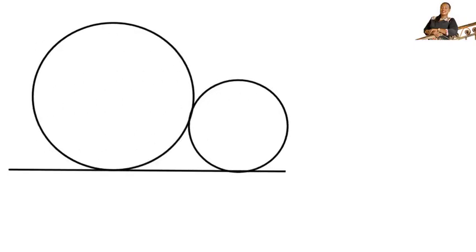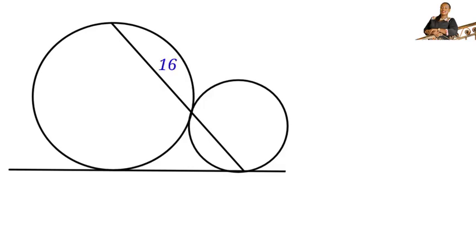We are given two circles resting on the same line. The smaller one touches the larger one externally. A straight line is drawn from the top of the larger circle through the point of contact down to the baseline. The length of the chord of the bigger circle is 16 units and the length of the chord of the smaller circle is 9 units. We are to find the area of the bigger circle.